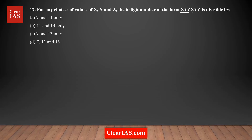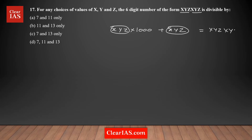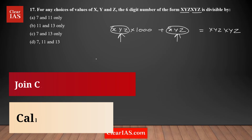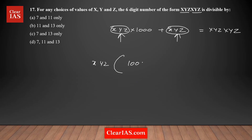Notice the pattern: xyzxyz = xyz × 1000 + xyz. Taking xyz as a common factor gives xyz × (1000 + 1) = xyz × 1001. Using place value, this representation is exact — xyz times 1001 gives you xyzxyz. Now we just need to prime factorize 1001.